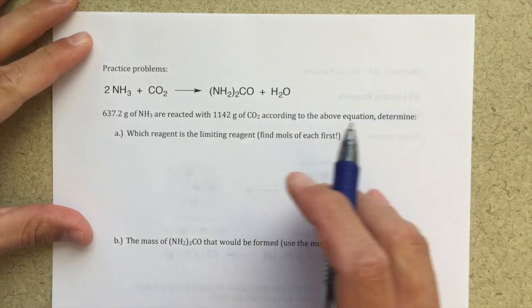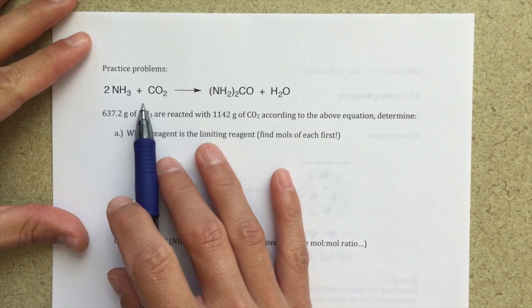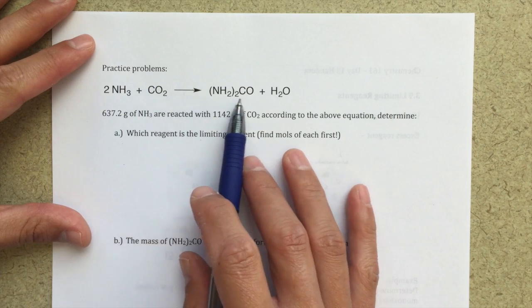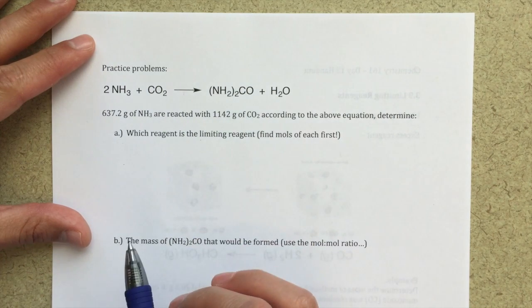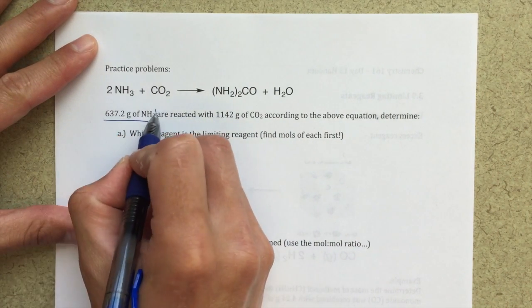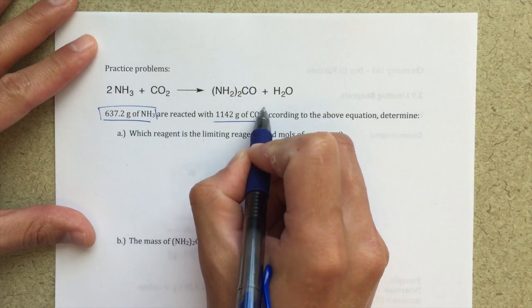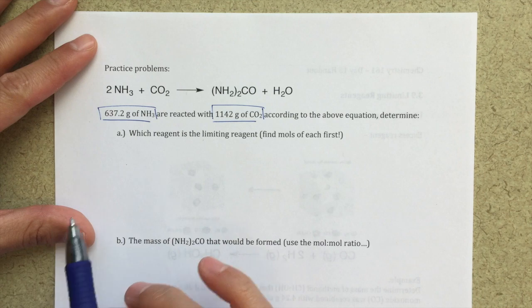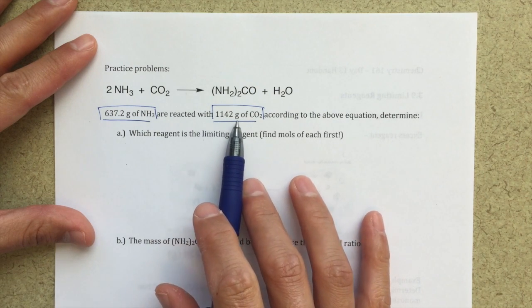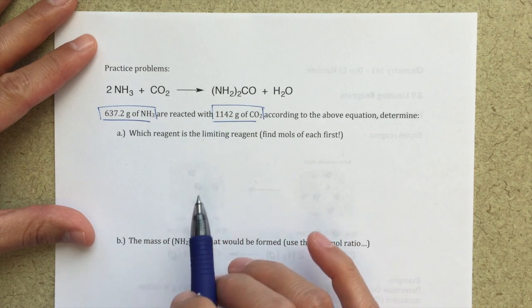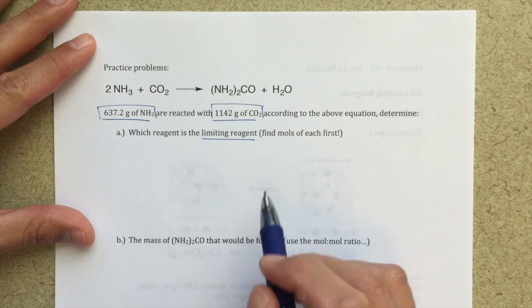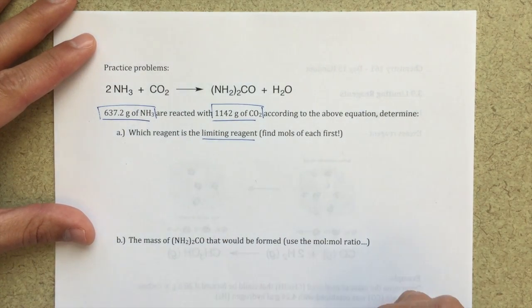In this problem we're given a balanced chemical equation, so two moles of NH3 react with one mole of CO2 to give us one mole of this product and then one mole of water. We're also given starting quantities of our two reagents, so I've got 637.2 grams of NH3 and 1142 grams of CO2. The first question says, what is the limiting reagent? And a little hint here says, find the moles of each first.